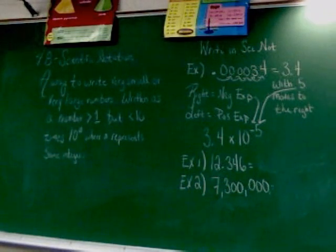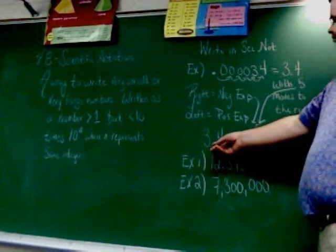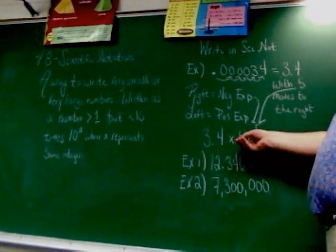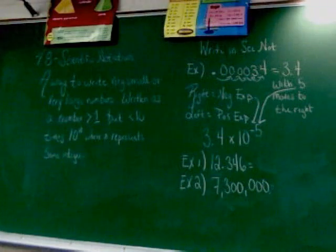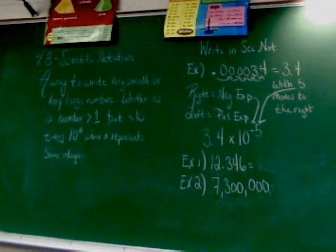Now, scientific notation is always written with that decimal thing, so the 3.4. Then, it's always times 10. Why is it 10? Because our number system is a base 10 system, which means that our number system revolves around the number 10.